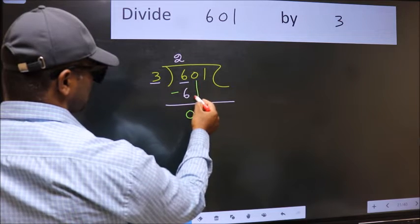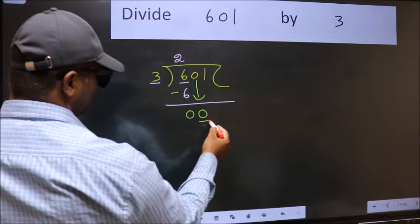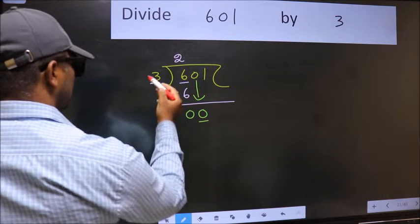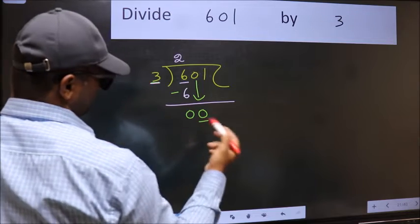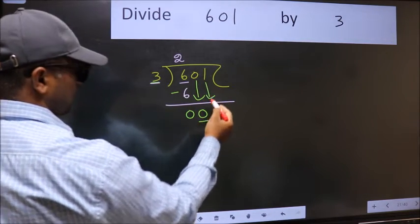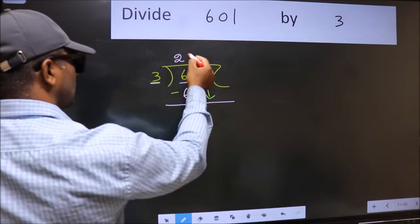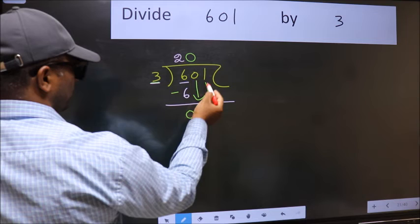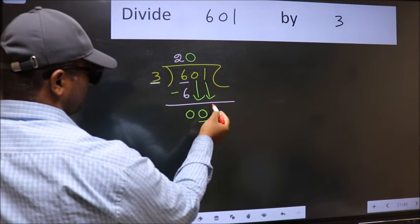After this, bring down the beside number. So 0 down. Now here we have 0 and here 3. 0 is smaller than 3, so we should bring down the second number. And the rule to bring down the second number is we should put 0 here. Then only we can bring down this second number. So 1 down.